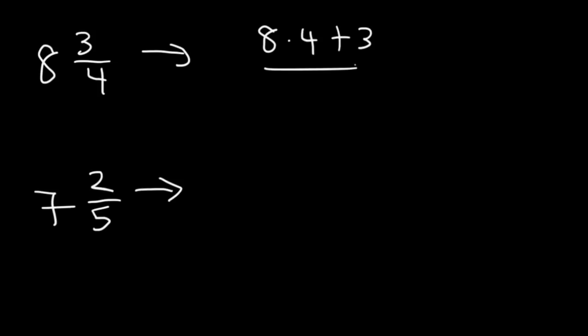Try these two examples. Convert the mixed number into an improper fraction. So, for the first one, on top it's going to be 8 times 4 plus 3. On the bottom, you're just going to have a 4. 8 times 4 is 32, and 32 plus 3 is 35. So, it's 35 over 4.